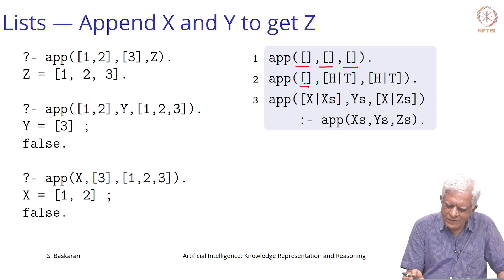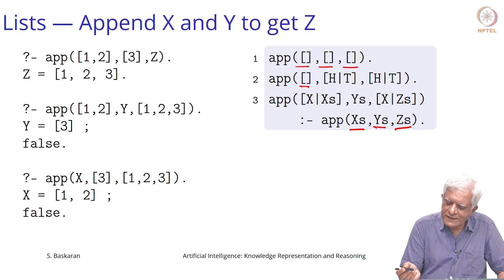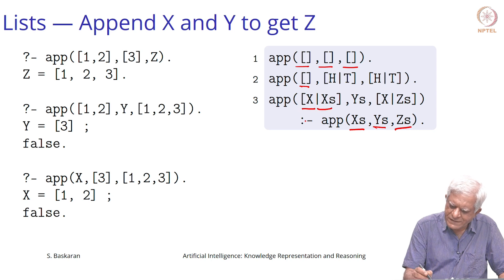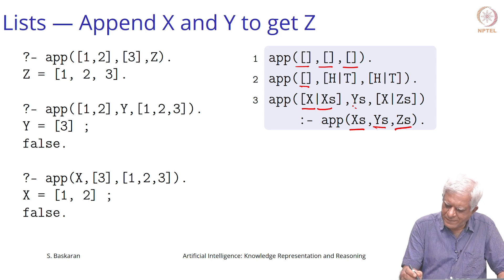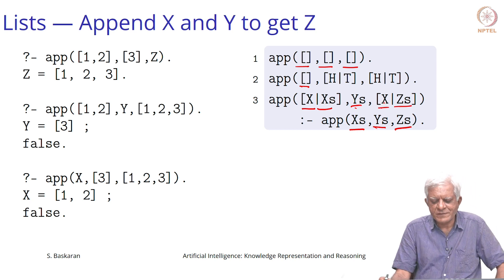The third clause is a recursive clause which says that if you take a list of x's and a list of y's and it gives you a list of z's, then it is also true that if you put x at the head of x's and append with the same y's, you will get z's with x at the front. We have seen this definition before.